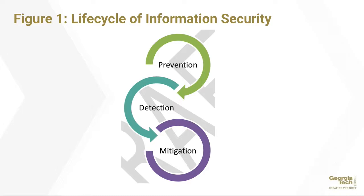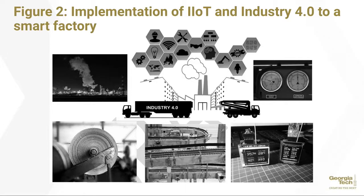Figure one shows the life cycle of information security, which consists of three parts: prevention, detection, and mitigation. Figure two, representing the schematic of Industry 4.0 in the context of a smart factory, shows that smart cities will constitute a number of critical infrastructures — nuclear power plants, water treatment facilities — and therefore are significant targets for cyber attackers. Cyber-physical systems are one of the broader points of vulnerability for cyber attackers.